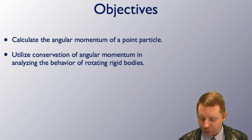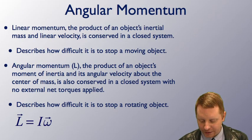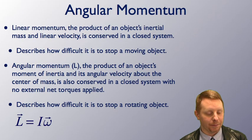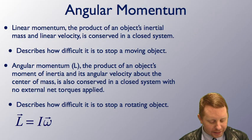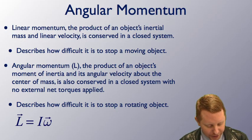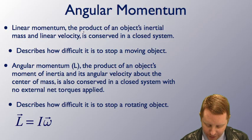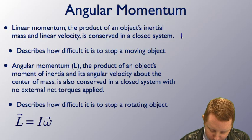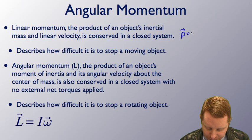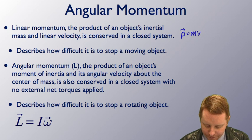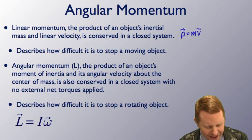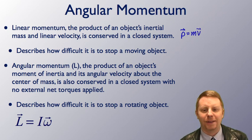Let's start by talking about what angular momentum is and comparing it to linear momentum. Linear momentum was the product of an object's inertial mass and linear velocity, and we talked about how that's conserved in a closed system. Linear momentum P equals inertial mass m times velocity, and really it describes how difficult it is to stop a moving object.